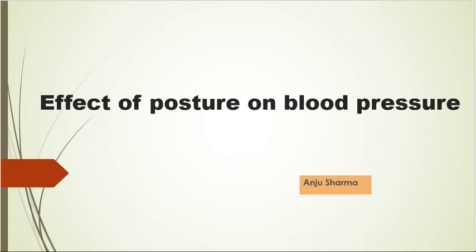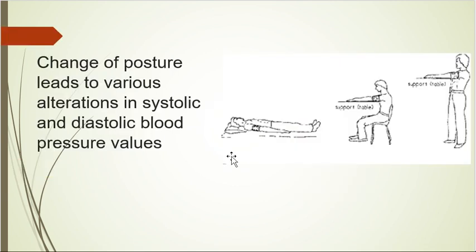Today we'll be talking about a practical topic: effective posture on blood pressure. When we change posture from morning till evening, blood circulation in our body keeps changing. This alteration of blood flow affects oxygen supply to various tissues. To maintain uniform oxygen supply, various mechanisms are operating at different levels.